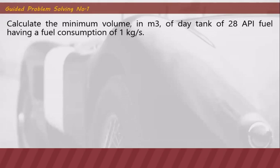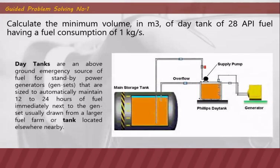Guided problem solving number one: calculate the minimum volume in cubic meters of a day tank of 28-degree API fuel having a fuel consumption of one kilogram per second. A day tank is an above-ground emergency source of fuel for standby power generators, sized to automatically maintain 12 to 24 hours of fuel immediately next to the genset, usually drawn from a larger fuel farm or tank located elsewhere nearby.